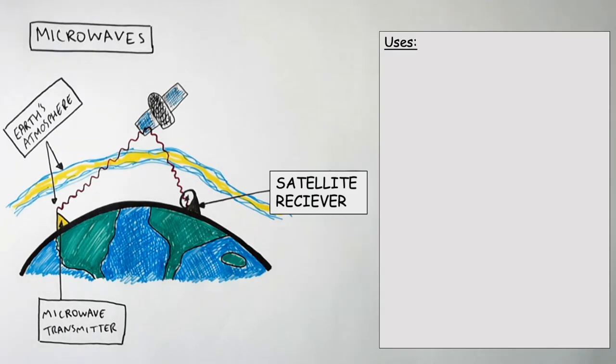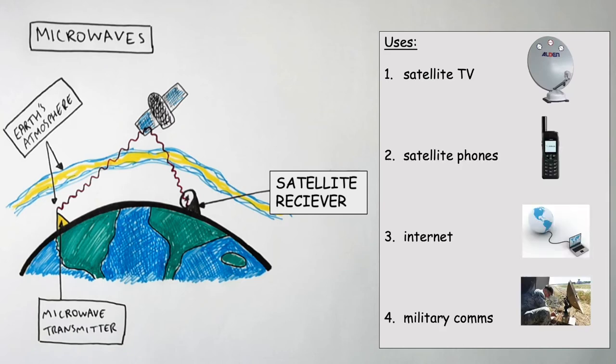So the uses of microwaves in communications are satellite TV, satellite phones, the internet, and military communication.